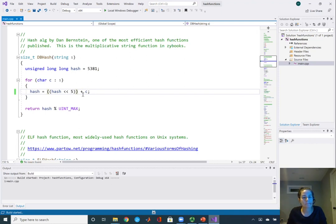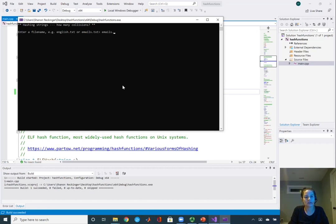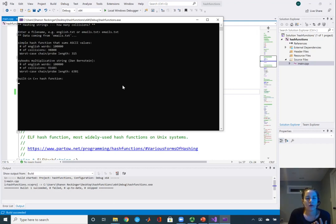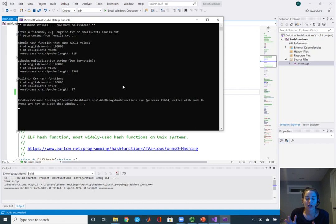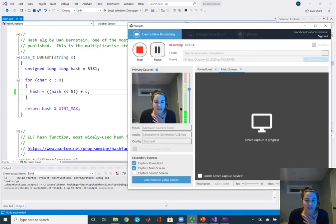We were getting 17 collisions for emails.txt. Now if we do the shift by 5 and multiply by 32, instead of 33, you can see that we get way more collisions. So it is important that it's this prime number that you're multiplying it by, so that you get less collisions.